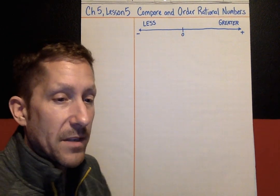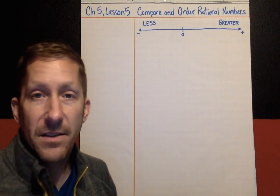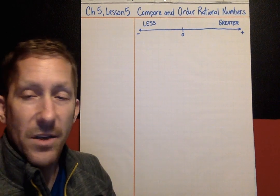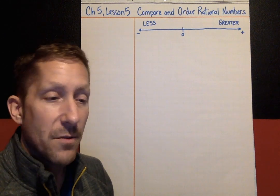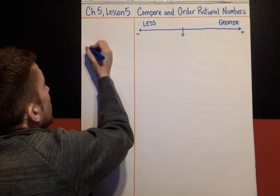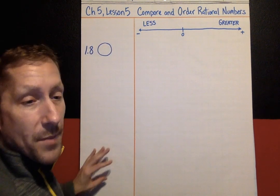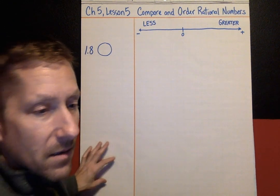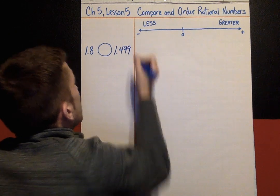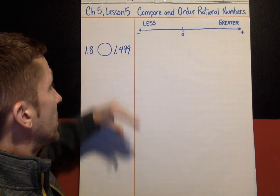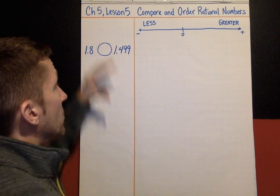We're going to talk about a lot of strategies today in this lesson. You can choose which strategy you'd like to use, or mix them up and use a combination. First example: compare 1.8 to 1.499 — what inequality works? Is it greater than or less than?